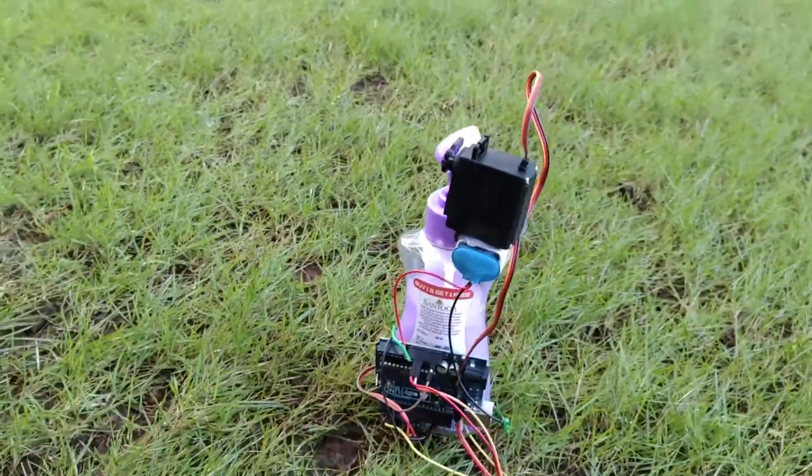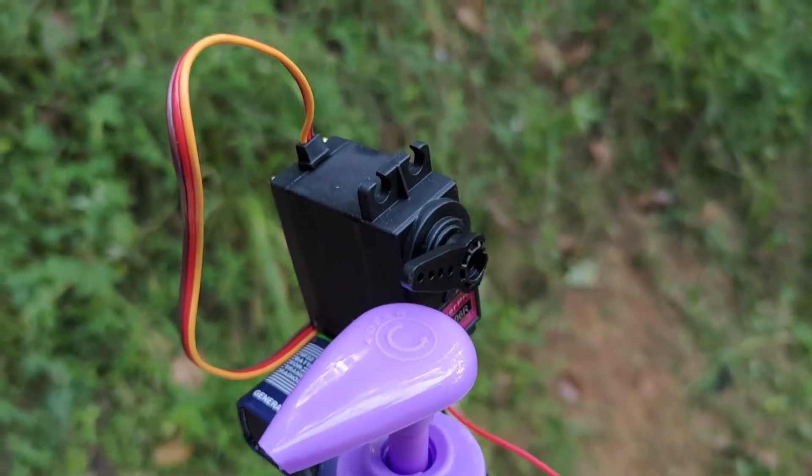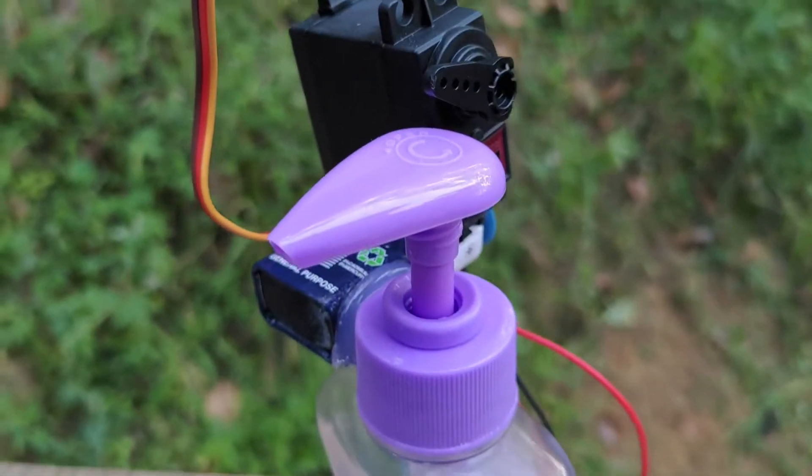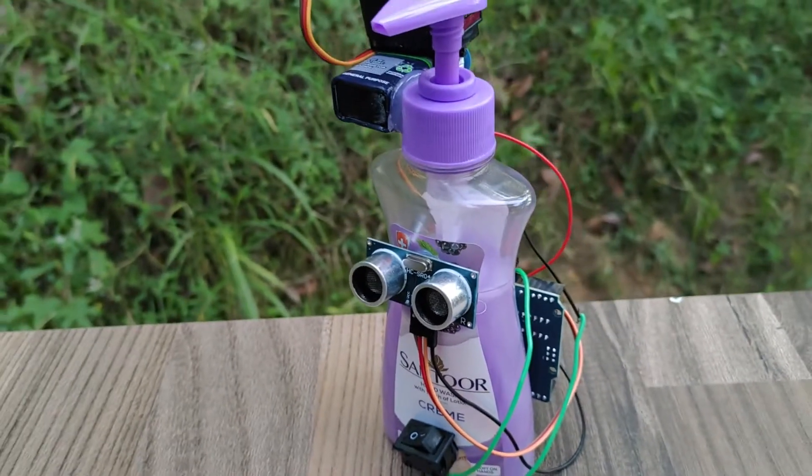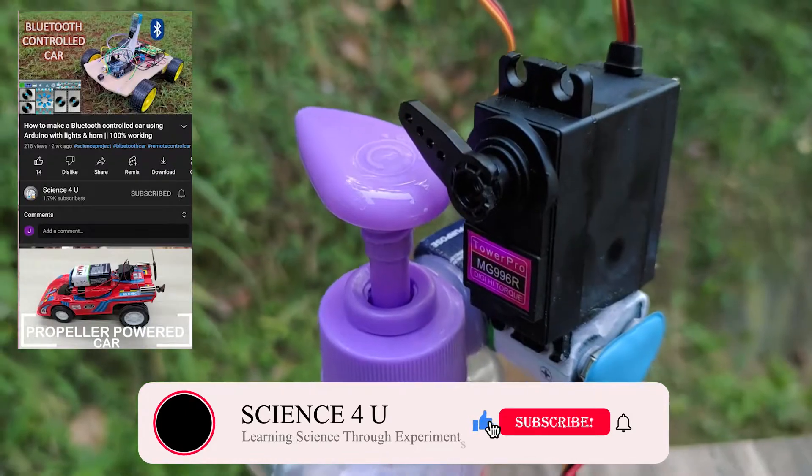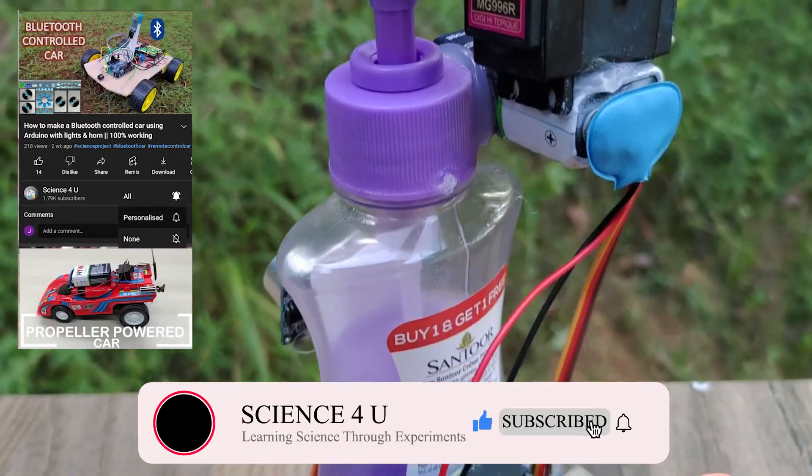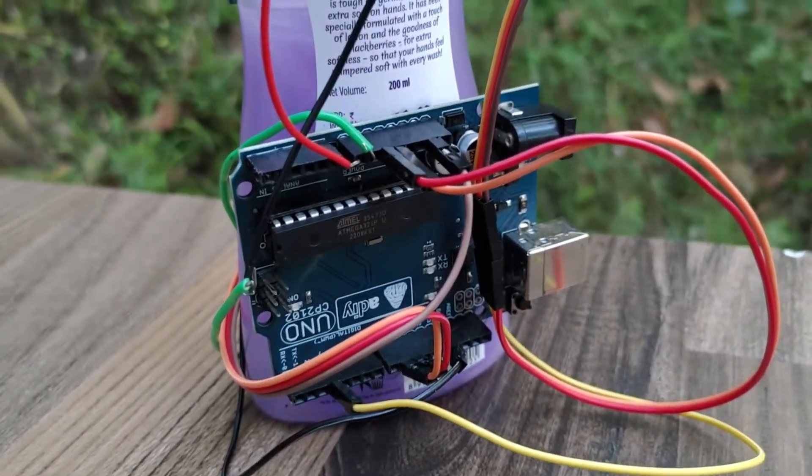A normal hand sanitizer bottle is converted to an automatic one using Arduino Uno, a stepper motor and an ultrasonic sensor. Please watch the video till the end to see the working of the automatic hand sanitizer. I will be coming up with new interesting projects every week, so please do subscribe to this channel so that you do not miss them. Thank you.